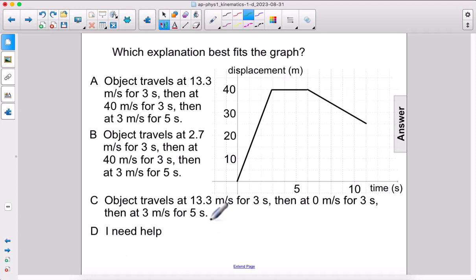Which explanation best fits the graph? Alright, so initially we're traveling at a certain speed. Whatever the slope of this line is, is the speed that we're traveling at.